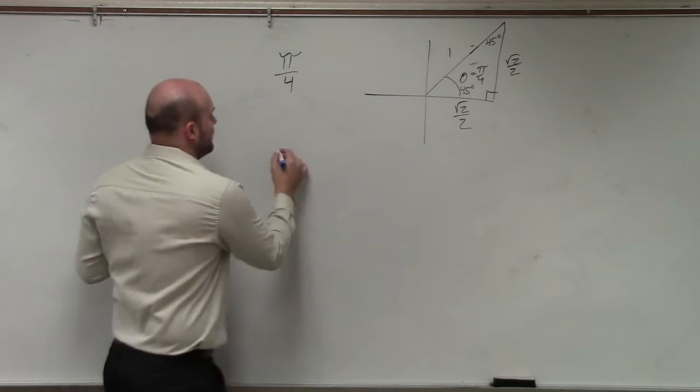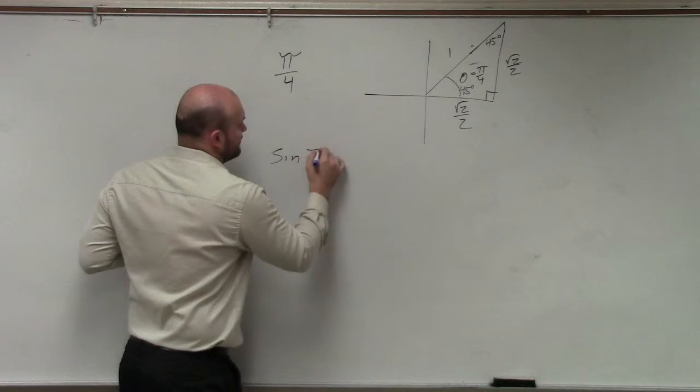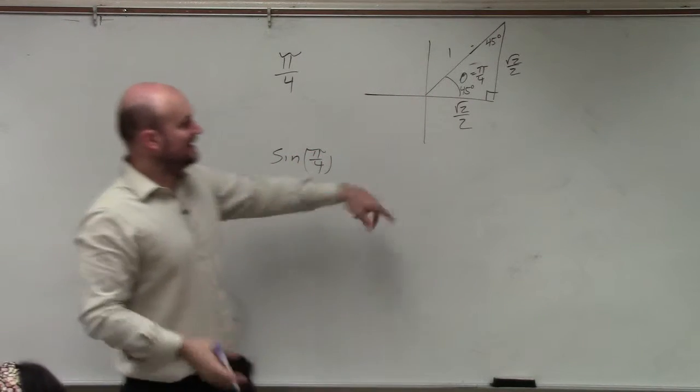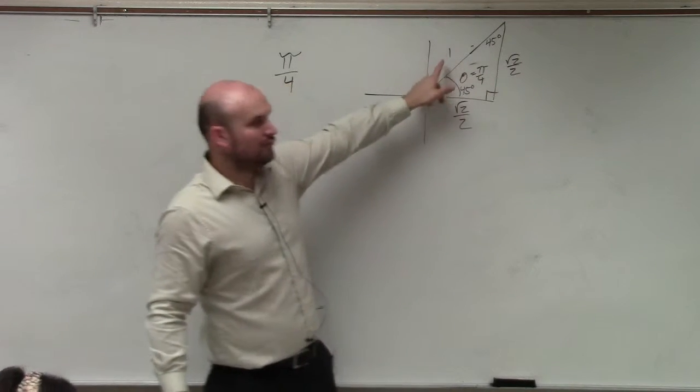So if I say, what is the sine of π/4? Because I asked you to find the sine, cosine, and tangent. Sine is opposite over hypotenuse, square root of 2 over 2.